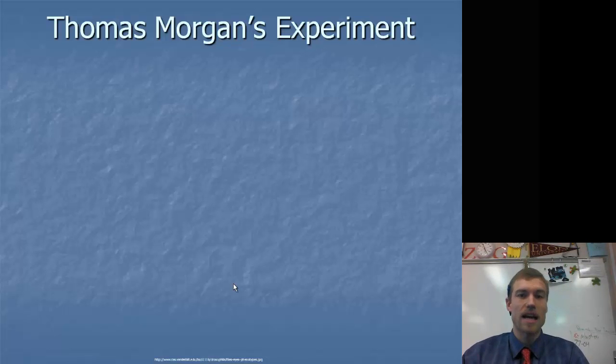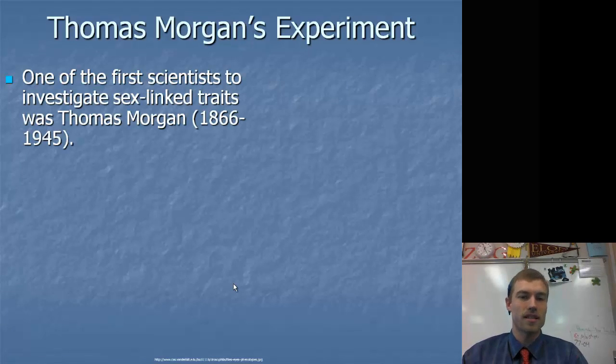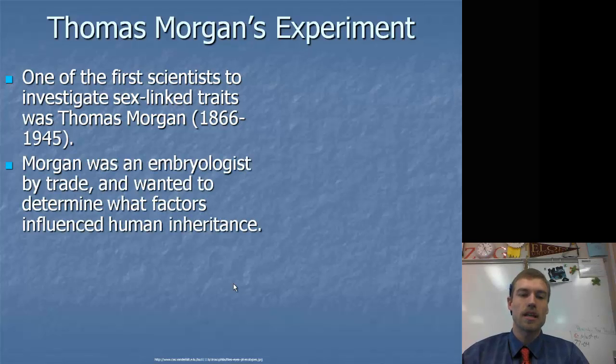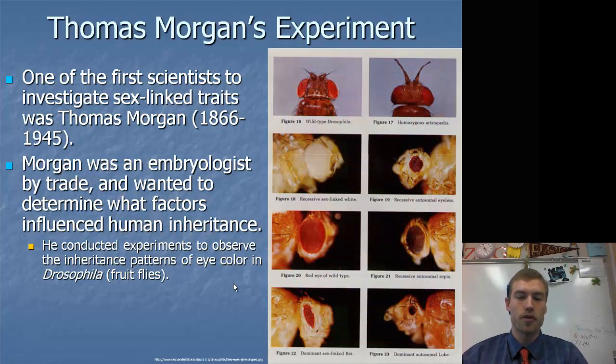There's this famous guy named Thomas Morgan who was the one who first determined these sex-linked characteristics, or rather that there were sex-linked traits. He did his work in the early 1900s, late 1800s. He was an embryologist by trade and was looking at the factors that influenced human inheritance. He conducted experiments looking at eye color in Drosophilia, which are fruit flies. You can see there are lots of different types of how the eyes can form.